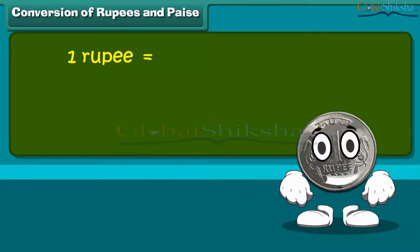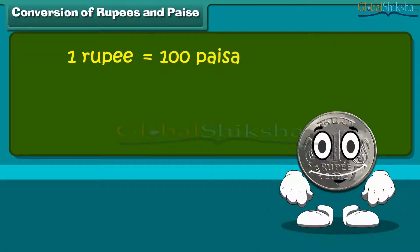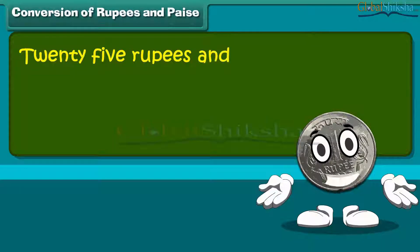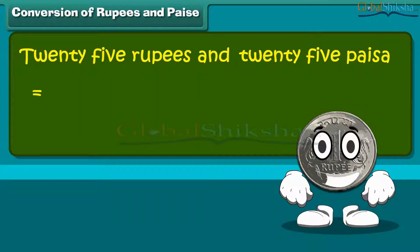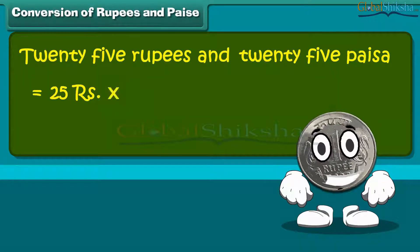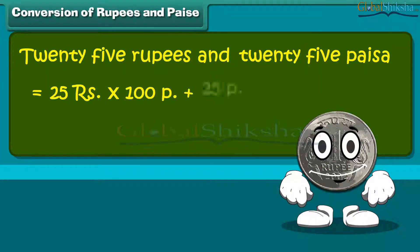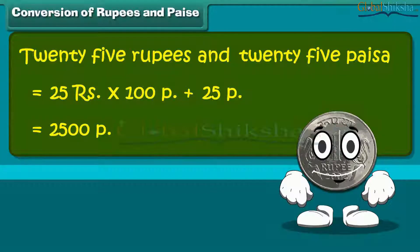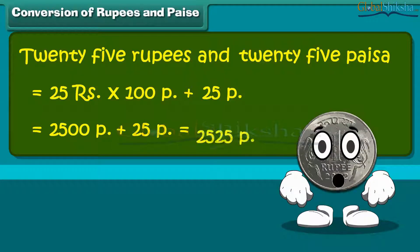1 rupee is equal to 100 paisa. For example, 20 rupees and 25 paisa is equal to 25 multiplied by 100 plus 25 paisa. This becomes 2500 plus 25 paisa. We can say it as 2525 paisa.